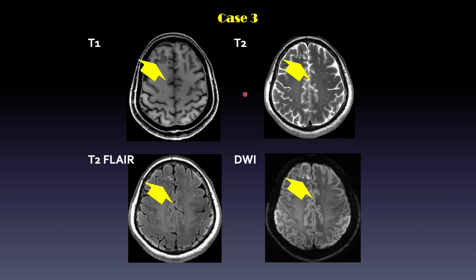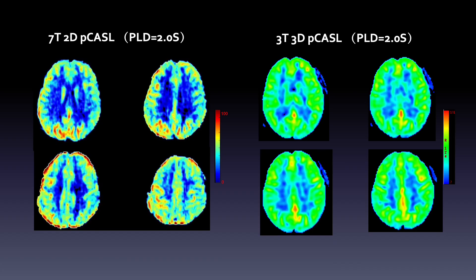Case 3 is a 55-year-old woman with probable dysembryoplastic neuroepithelial tumor (DNET). There is a multinodular lesion in the right frontal region. The patient underwent ASL at both 3T and 7T. In this case, both field strengths showed hypoperfusion. However, on the 7T, you can see better delineation of the white matter and gray matter boundary, as well as the hypoperfusion lesion, which improved diagnostic confidence.